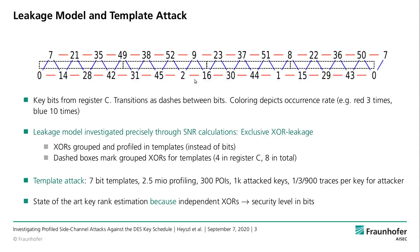We approached this by precisely analyzing the leakage model through calculating SNRs — for value leakage, meaning the leakage from bits directly, and for leakage occurring through the XOR of two subsequent bits. We found that this device exhibits exclusively XOR leakage: this specific security controller only leaks the XOR difference between subsequent peaks. This means we can group those XOR transitions into templates. We created 7-bit templates and used state-of-the-art key rank estimation for those independent template results to derive security levels.